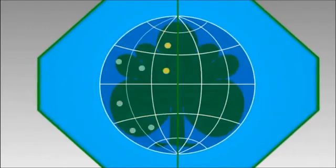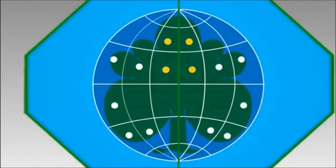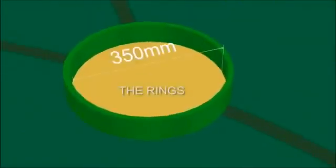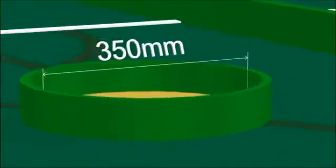There are seven steel rings for each team to place the leaves. Each ring with dimension of 350 millimeters in diameter and 50 millimeters in height.